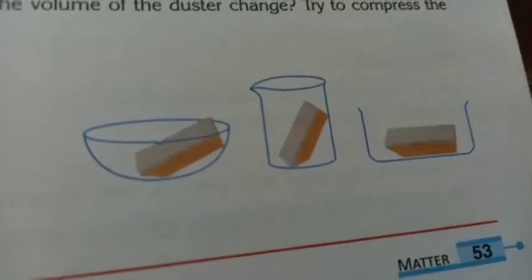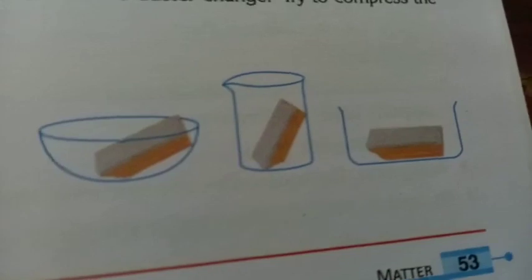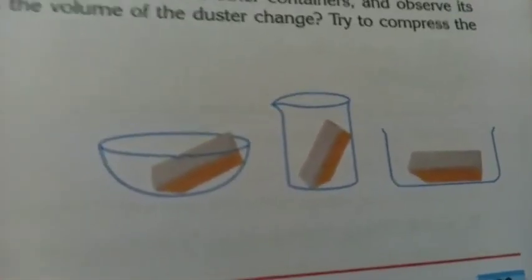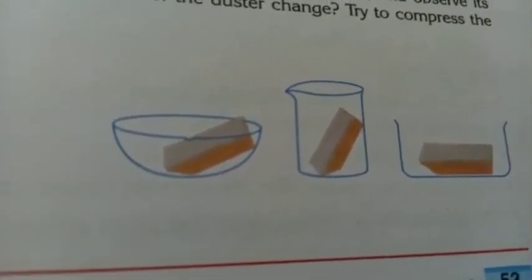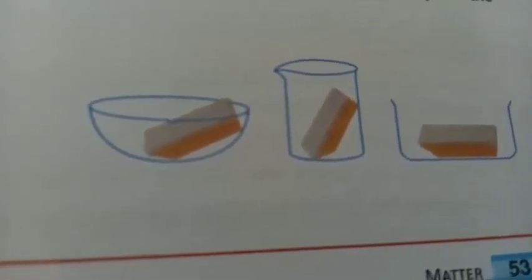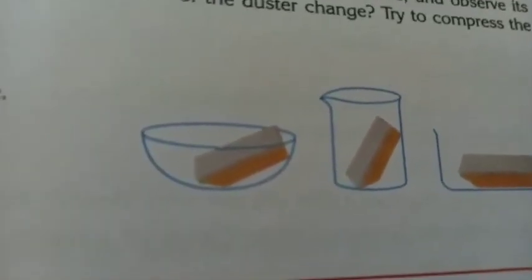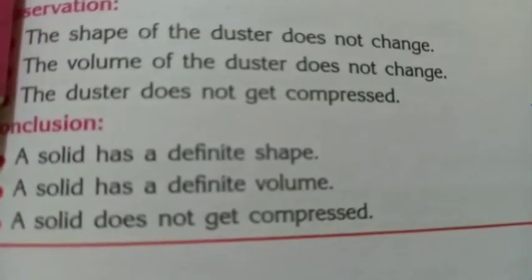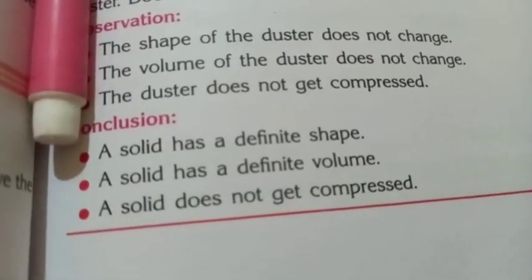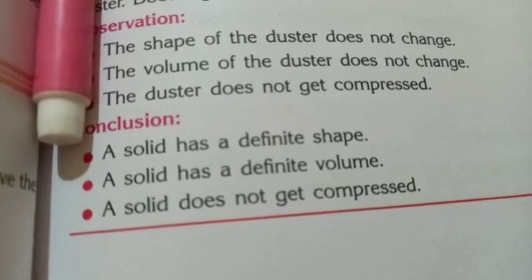As discussed earlier, your book has a fixed shape, takes up a proper space, and you can stack books. Solids are stackable and have a fixed shape and volume. Here, the duster is placed in three different containers. The shape of the duster does not change, its volume does not change, and it does not get compressed. So we conclude: a solid has a definite shape, a definite volume, and a solid does not get compressed.